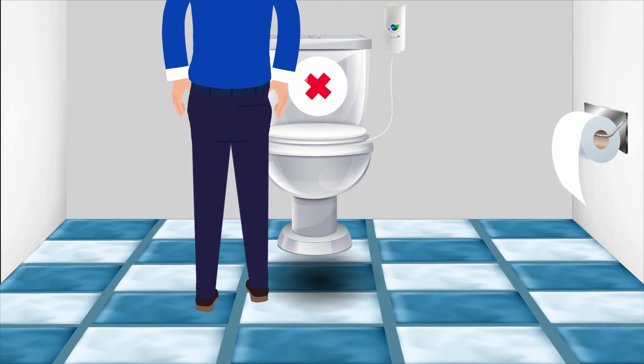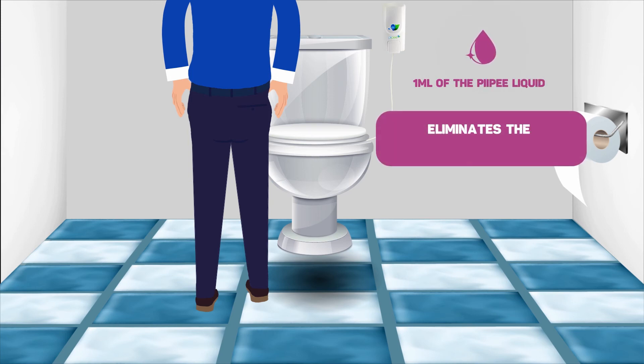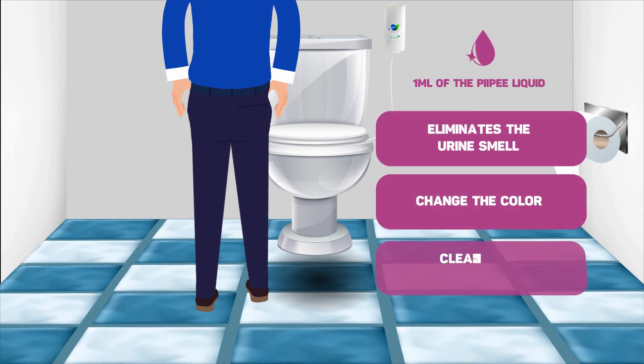After urinating, there is no need to flush. By pressing the PP dispenser, it dispenses just one milliliter of PP liquid, and it eliminates the urine smell, changes the colour, cleans, and sanitises the toilet bowl.